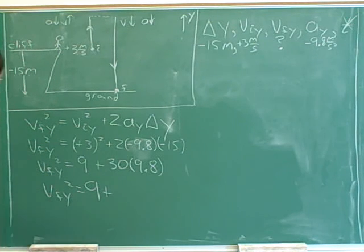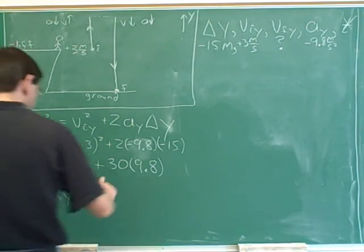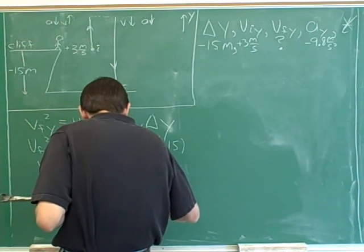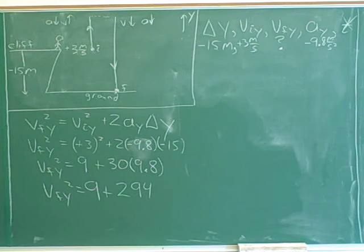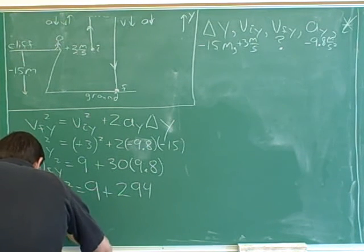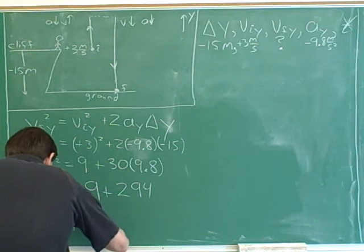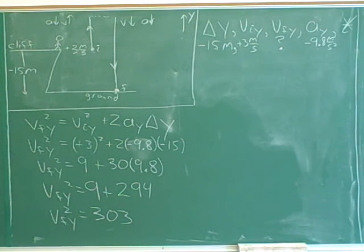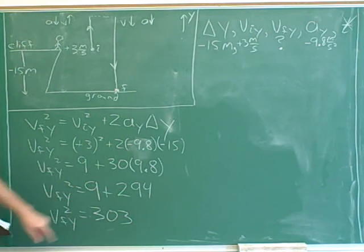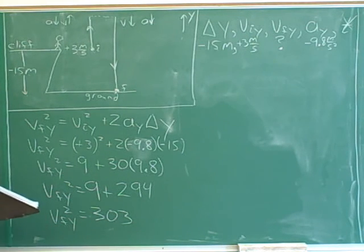We can use our calculator to do 30 times 9.8, which is 294. And then 9 plus 294 is 303. Now notice that this is not the final velocity. The final velocity is not 303 — it's the final velocity squared that equals 303. So we still have to figure out what the final velocity is by getting it by itself.